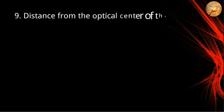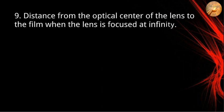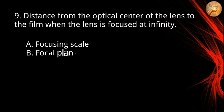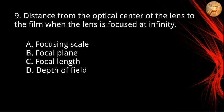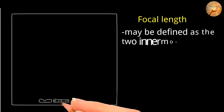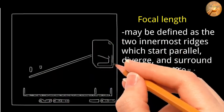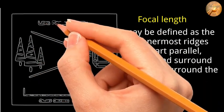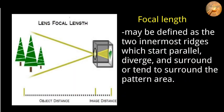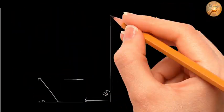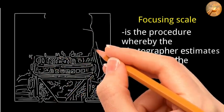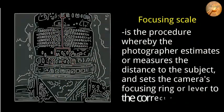Number nine: distance from the optical center of the lens to the film when the lens is focused at infinity. The correct answer is focal length. Focal length tells us the angle of view — how much of the scene will be captured — and the magnification, or how large individual elements will be. The longer the focal length, the narrower the angle of view and the higher the magnification. The focusing scale is the procedure whereby the photographer estimates or measures the distance to the subject and sets the camera's focusing ring to the correct distance.